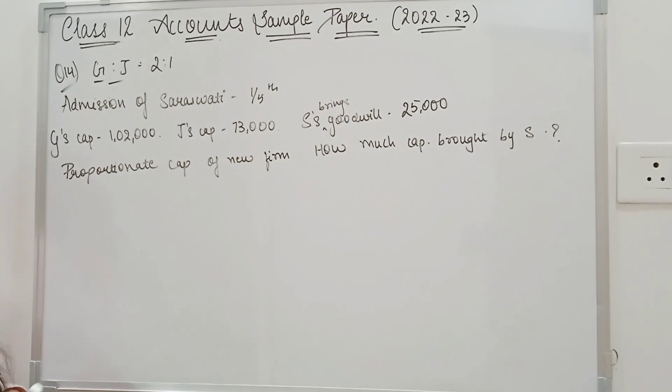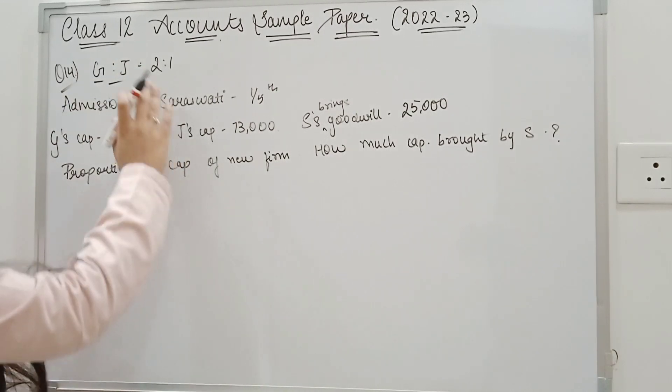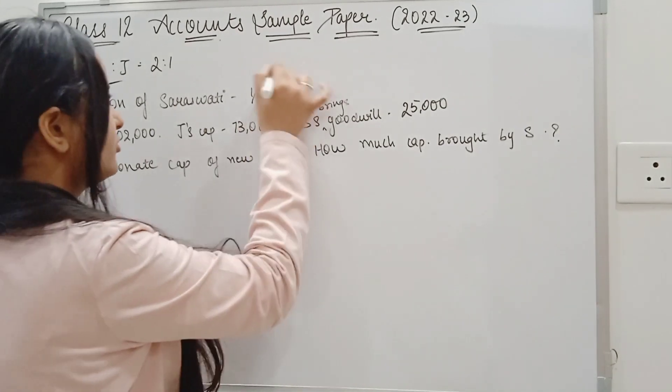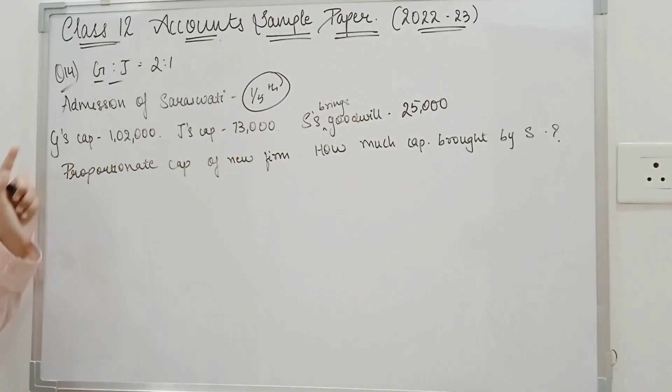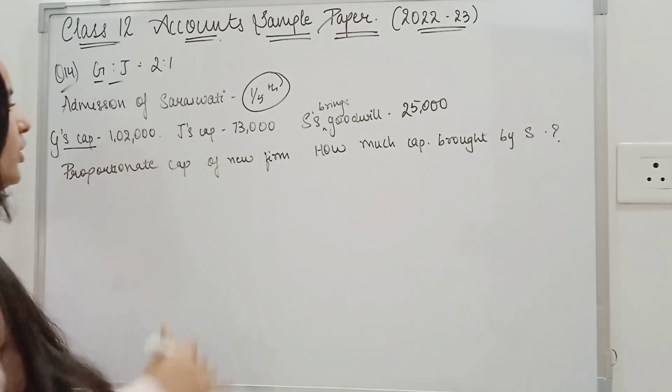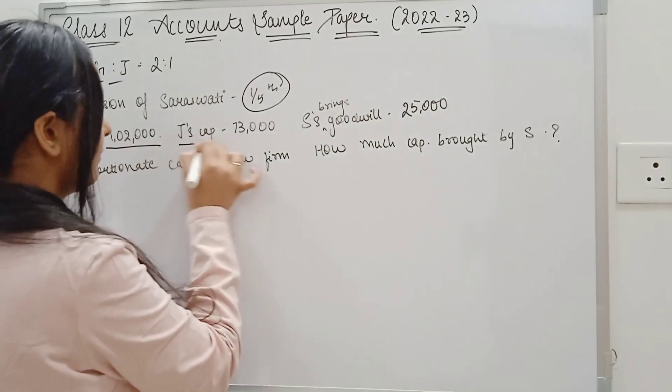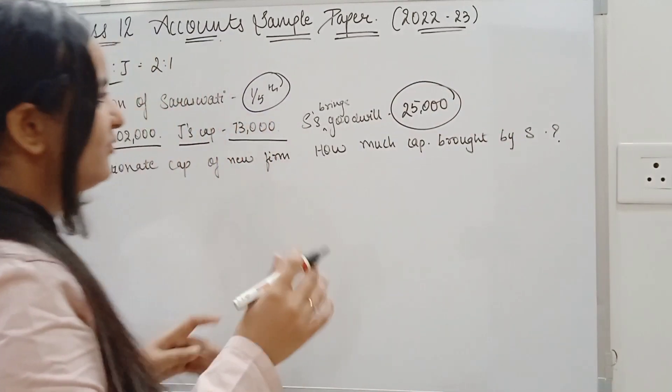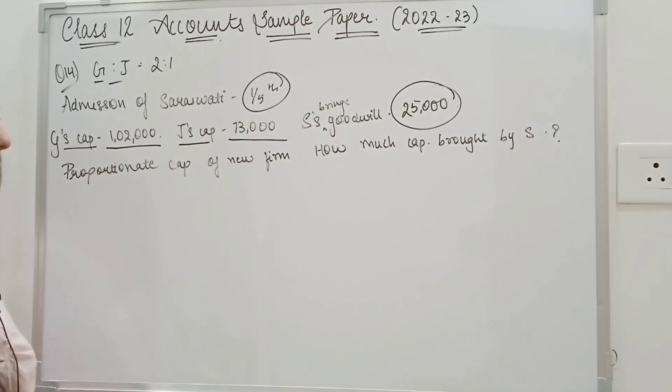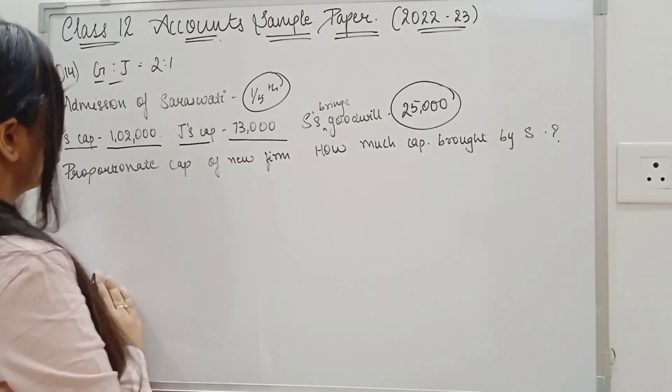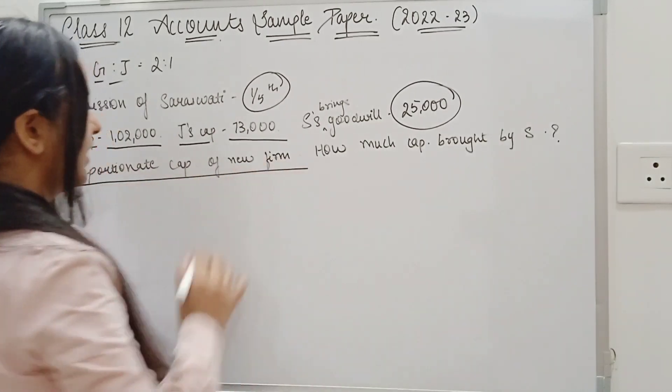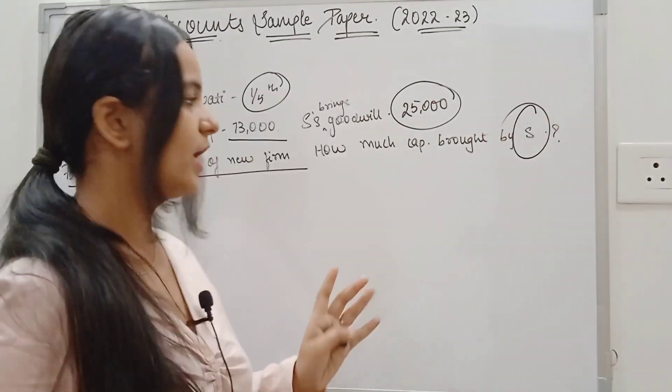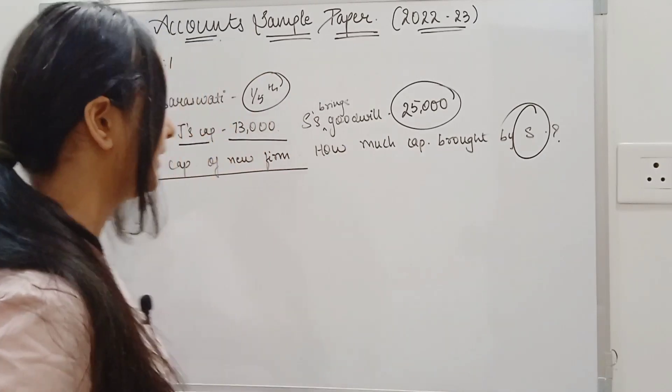So question number 14, there are two partners G and J which is Ganga and Jamuna. And they have the ratio of profit sharing, they have 2 ratio 1. And at the time of admission of Saraswati, the share of 1/5th. The capital of new firm, the proportionate capital of new firm will contribute. How much capital can be brought by S? So here, we have asked how much capital can be brought here.